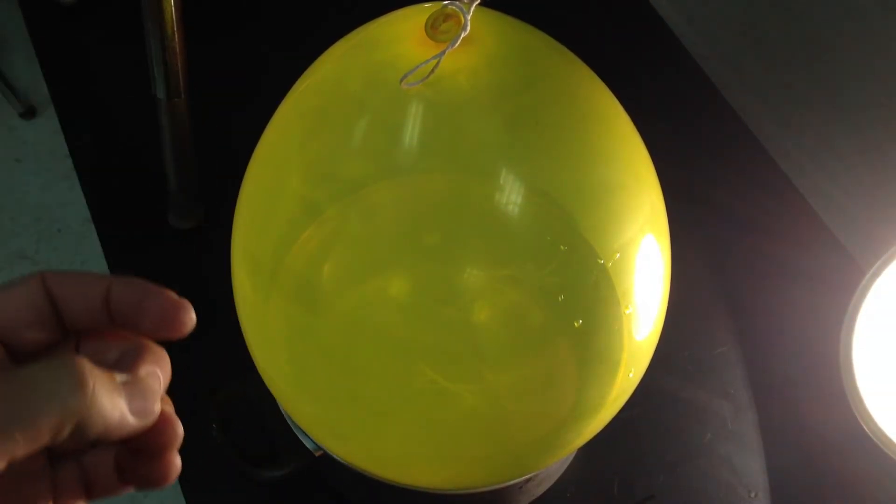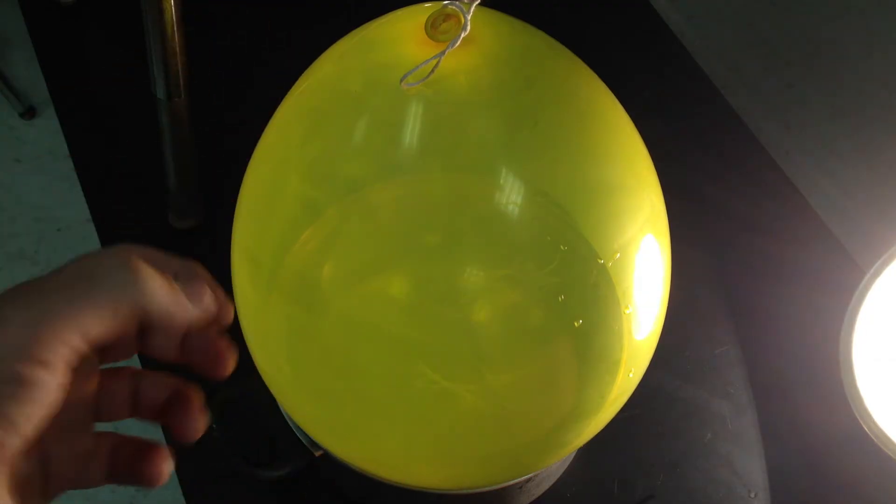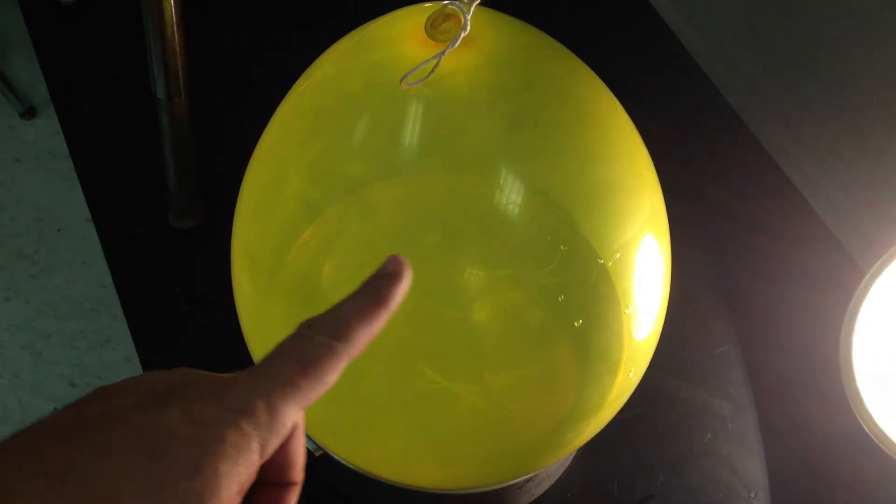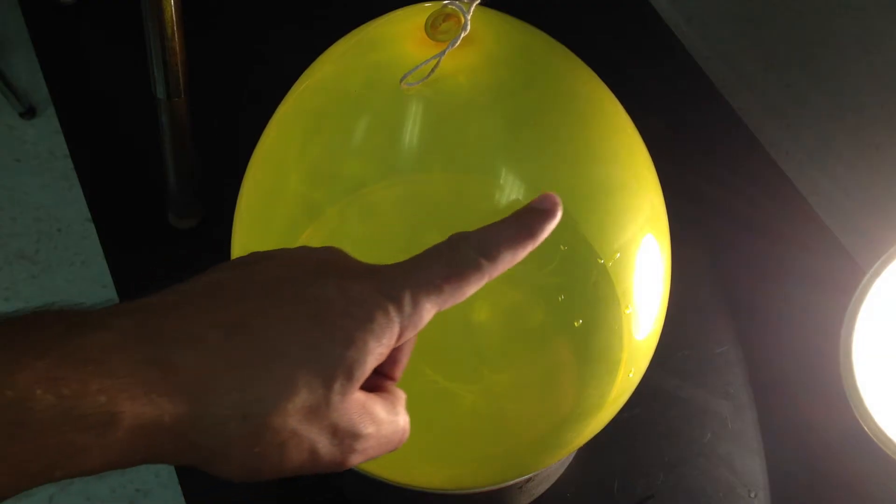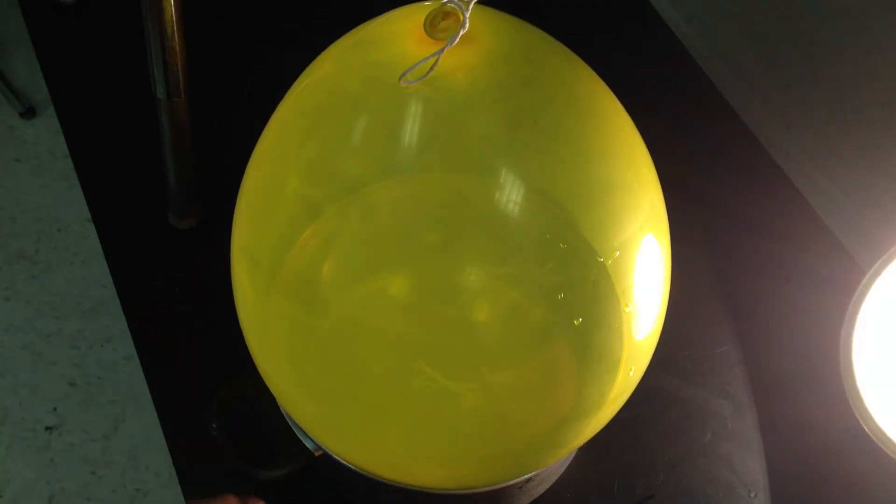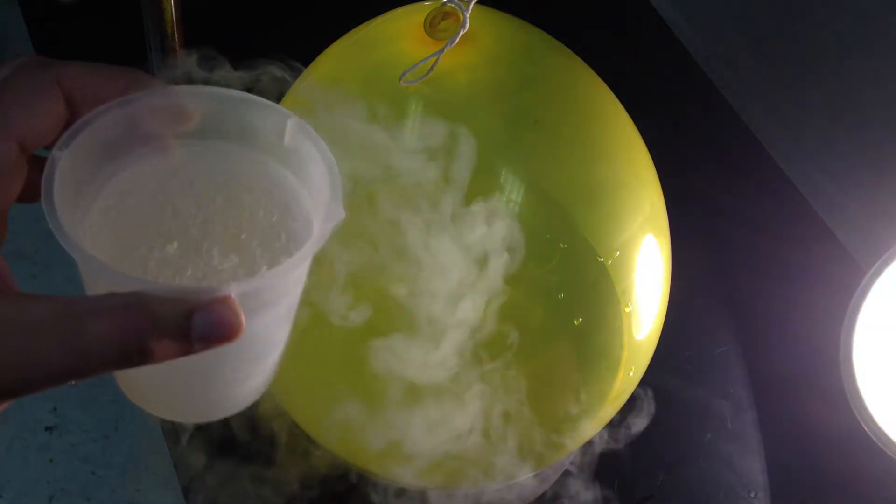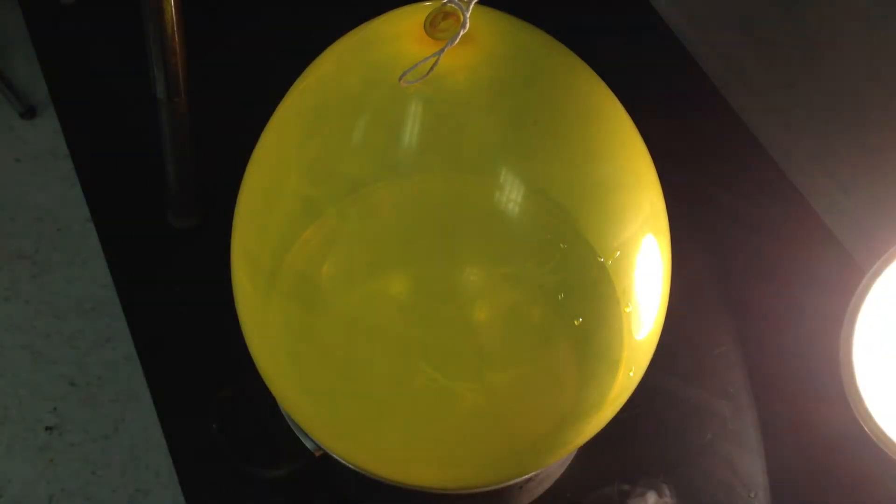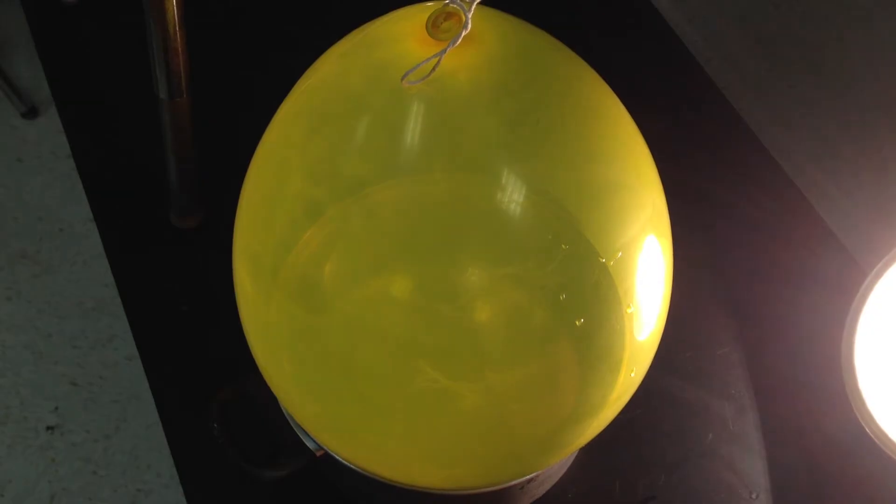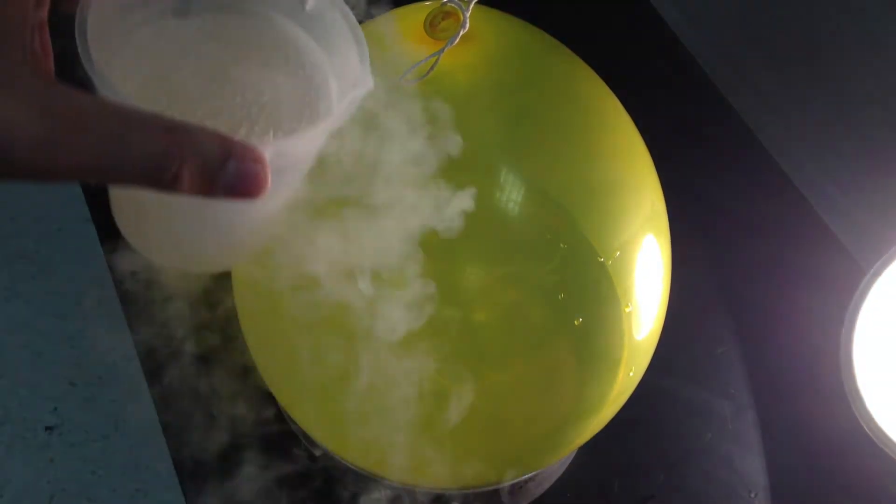As temperature drops, so does the average kinetic energy. Therefore, the pressure has to drop. If these molecules slow down their translational motion, they won't collide with the walls as much. We're going to take liquid nitrogen, about negative 200 degrees Celsius, and slow down these gas molecules enough to deflate this.